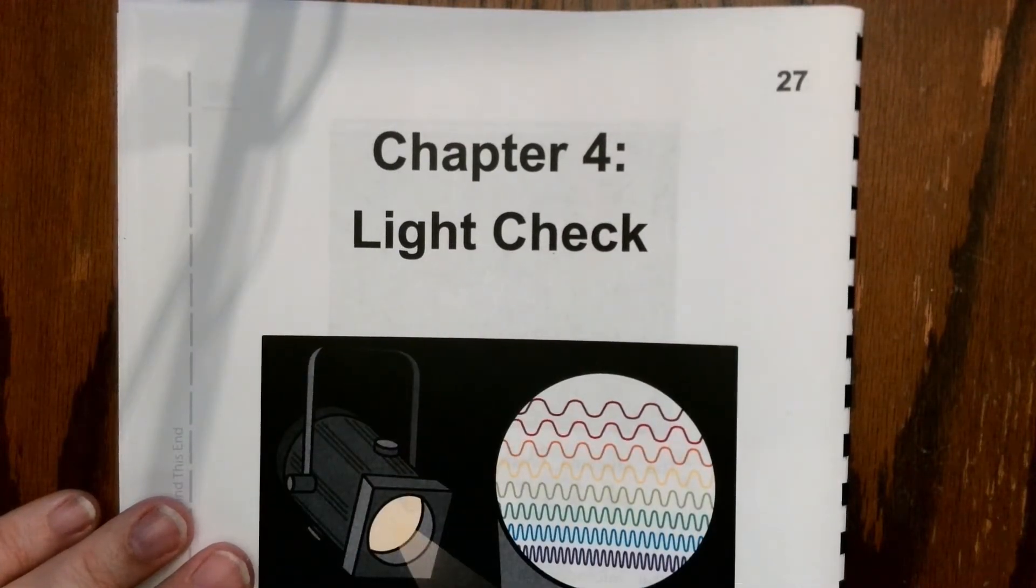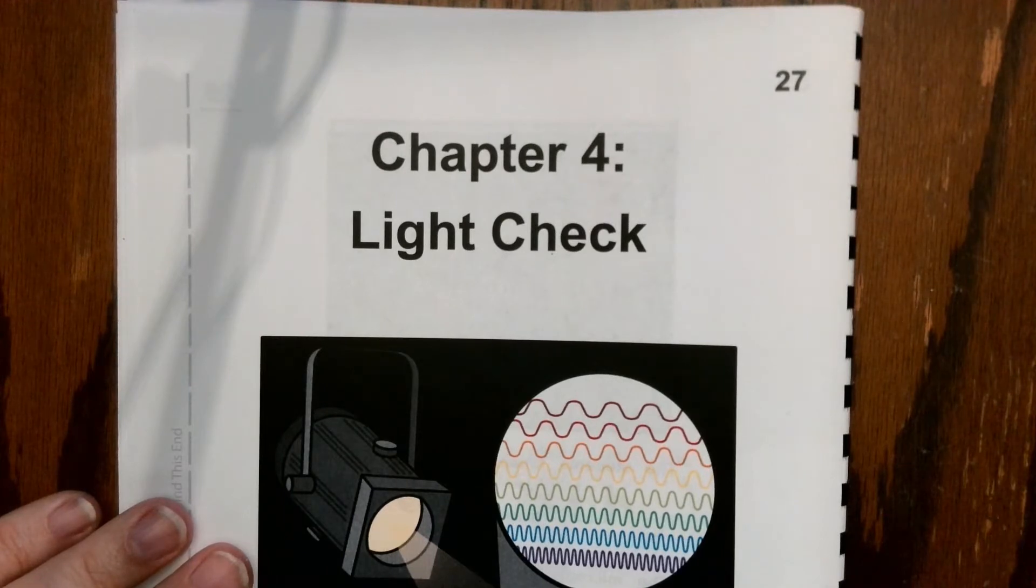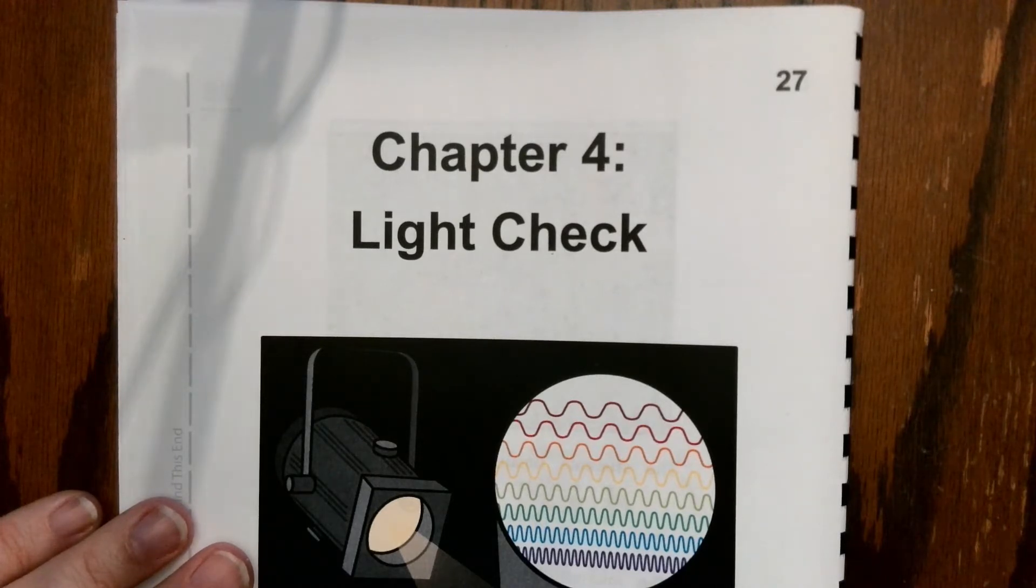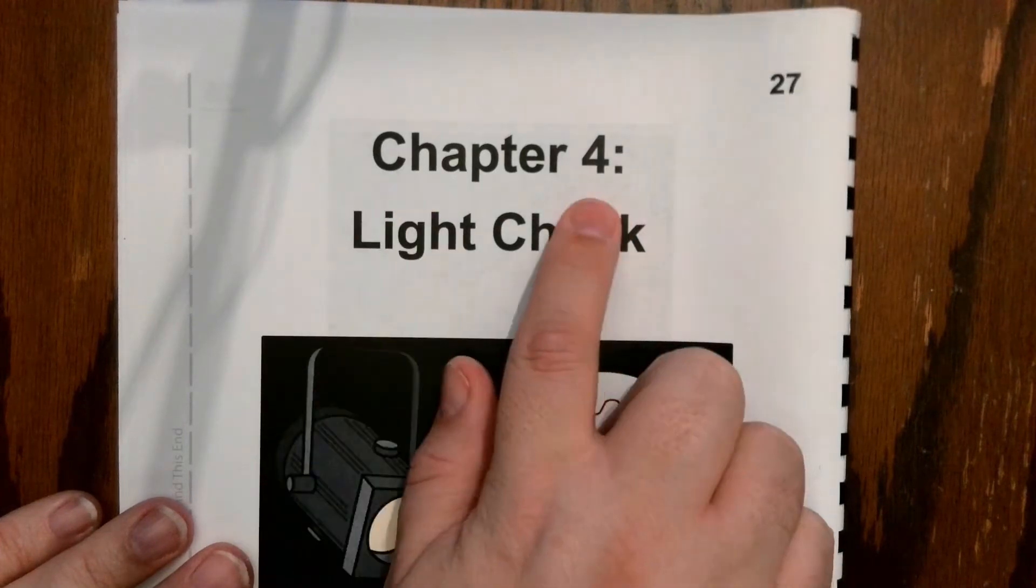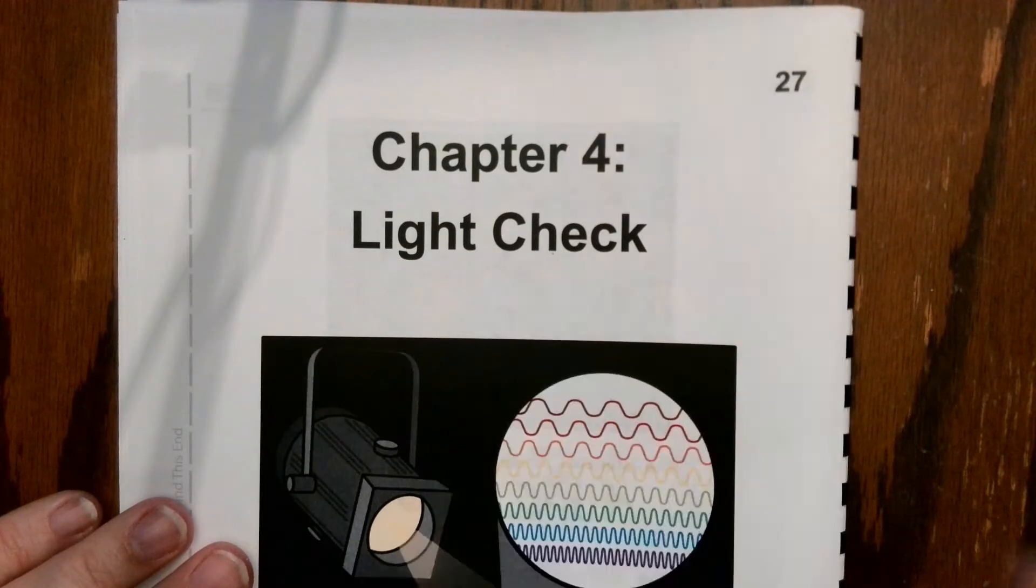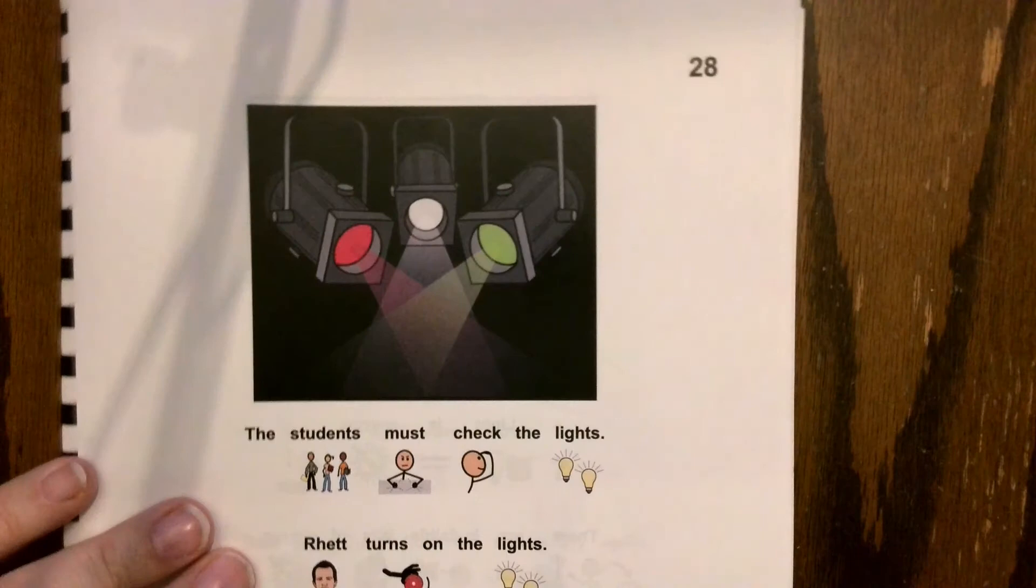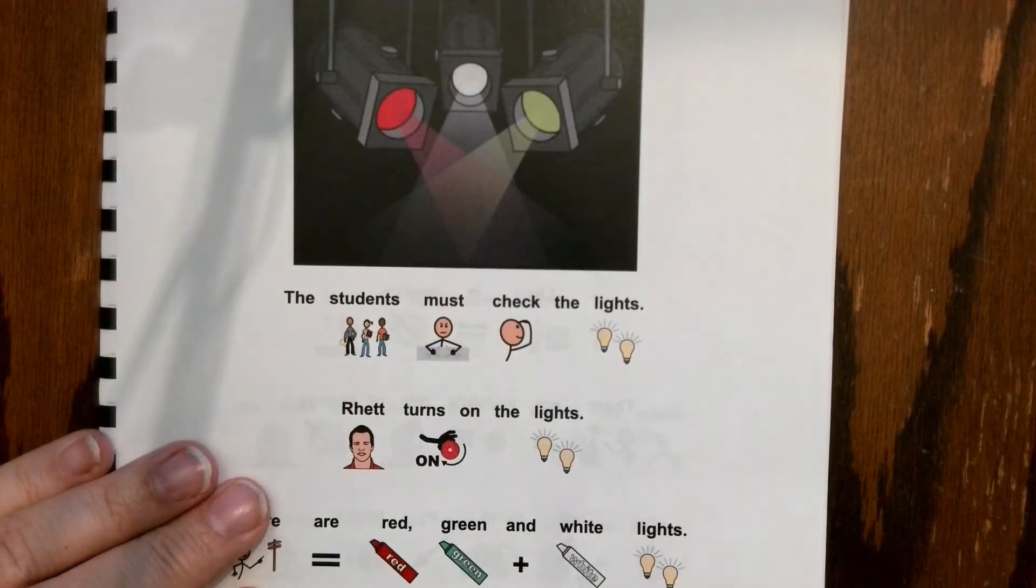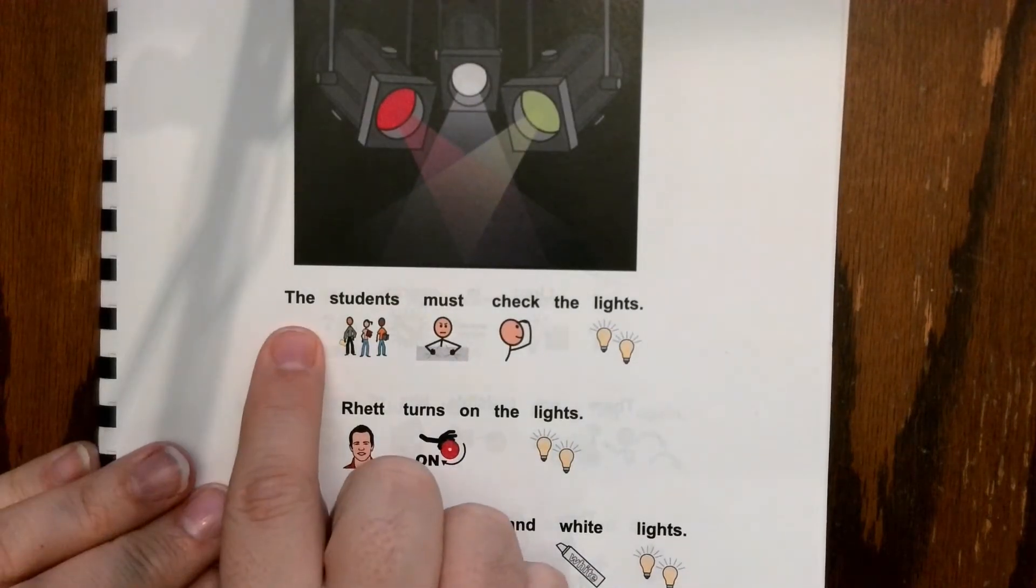Once we get there, we're ready to read. So what I want you to try to do is try to read the word before I read the word. Okay, here we go. Chapter 4, Light Check. Turn the page, put your finger on the word. Here we go.